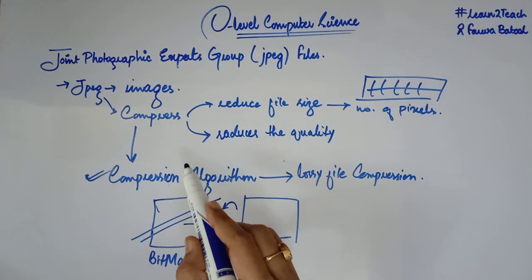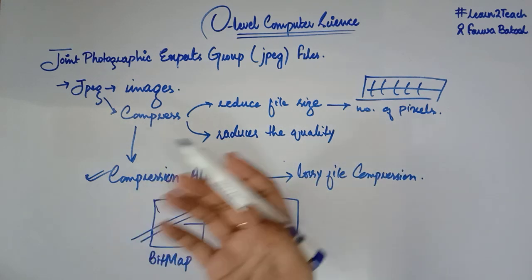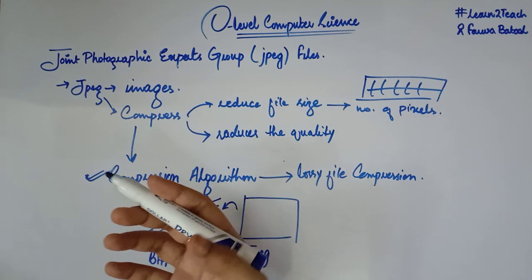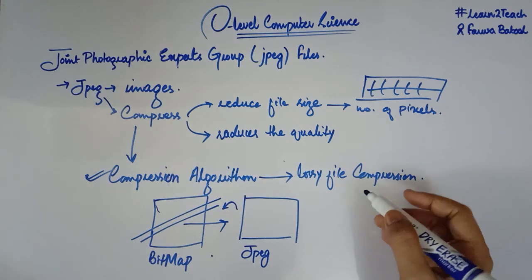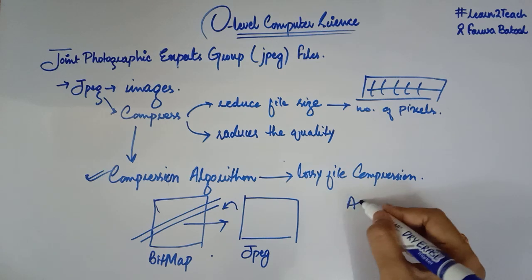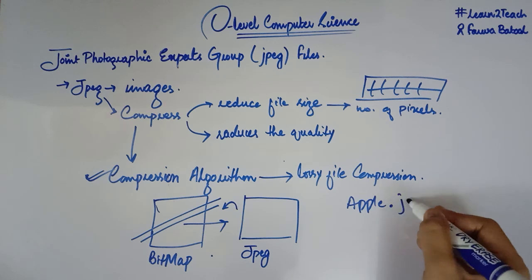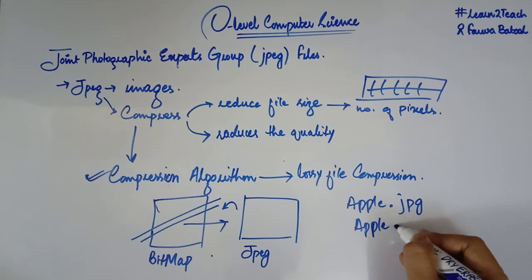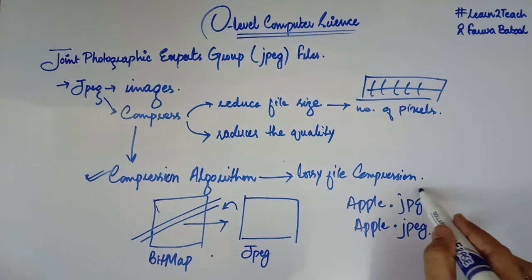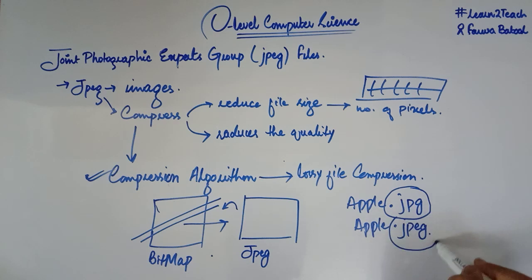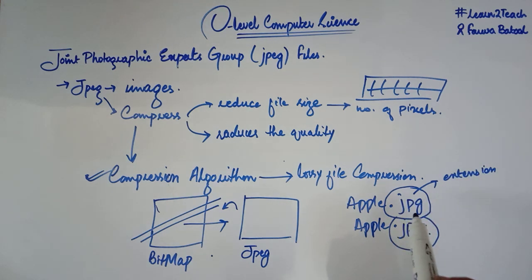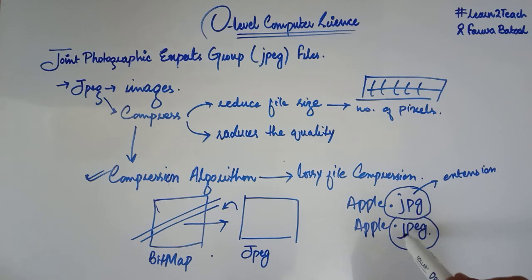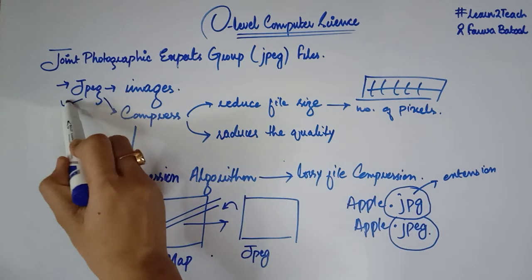The file extension is something that identifies the file format — it is the suffix at the end of the file name. For JPEG images, a file might be named apple.jpg or apple.jpeg. The extensions .jpg and .jpeg are the file extensions for JPEG images. You can recognize a JPEG image by looking at its extension.